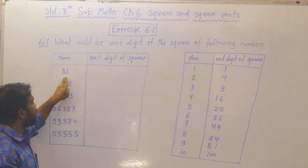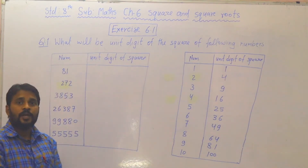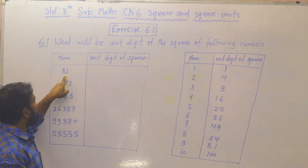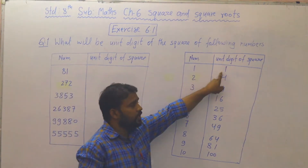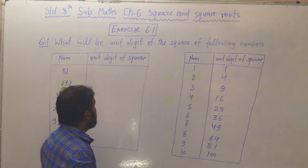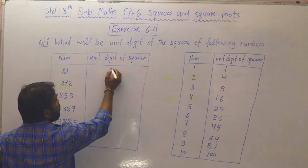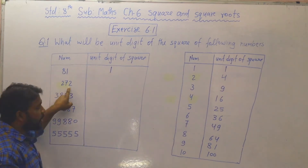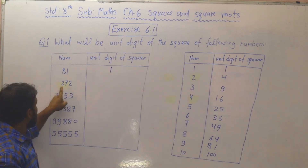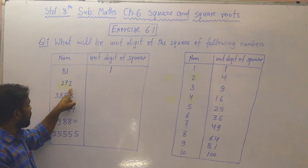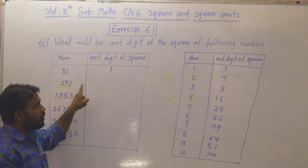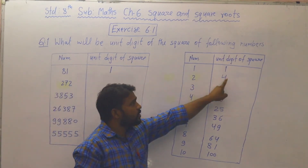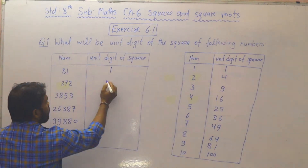आपके पास number है 81. 81 का unit digit क्या है? 1. 1 का square करने के बाद क्या आता है? 1. Means यहाँ पे unit digit 1 होगा. इसके बाद आता है 272. तो unit digit 2 है, therefore unit digit of square equal to 4.